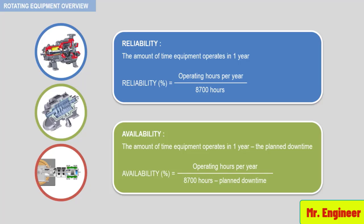Availability, on the other hand, considers planned downtime, including turnarounds. Both values are stated in percentage, and typical equipment availabilities when properly specified are 97% and above. Availability directly affects product revenue. For refineries, for example, the loss of revenue can exceed one million U.S. dollars a day if a critical piece of equipment is shut down.